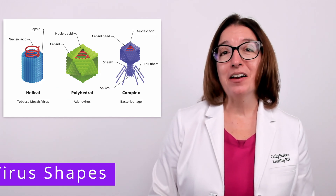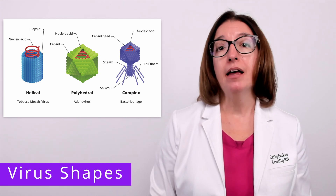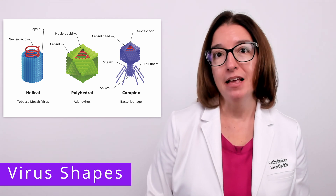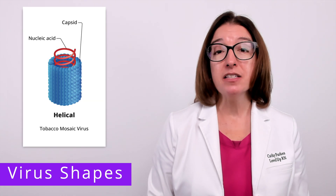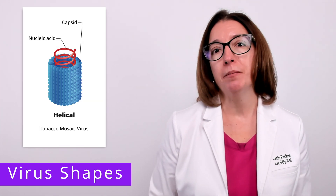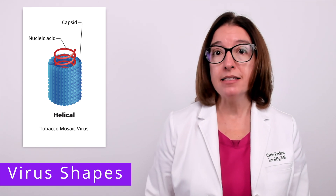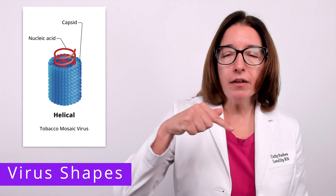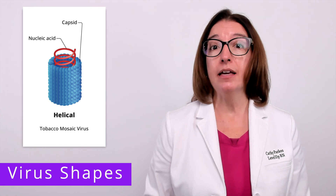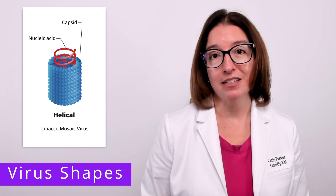Now let's talk about key virus shapes, which include a helical shape, a polyhedral shape, and a complex shape. A virus with a helical shape has a cylindrical or rod-shaped capsid with the viral nucleic acid coiled up inside the capsid. An example of a virus with a helical shape is the tobacco mosaic virus.